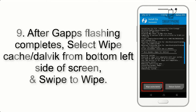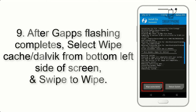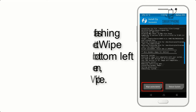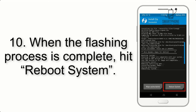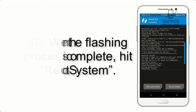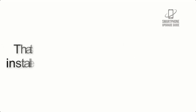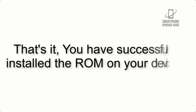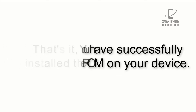Step 8: Flash the gapps zip package in the same manner. Step 9: After gapps flashing completes, select Wipe Cache and Dalvik from the bottom left side of the screen and swipe to wipe. Step 10: When the flashing process is complete, hit Reboot System. That's it — you have successfully installed the ROM on your device.